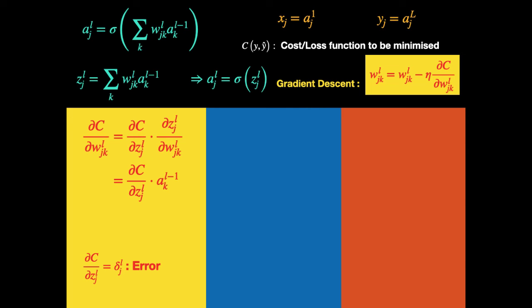We denote ∂C/∂Z superscript L subscript J by the symbol delta superscript L subscript J, which is called the error function. So the derivative of the cost function with respect to the weight simplifies to: delta superscript L subscript J multiplied by A superscript L-1 subscript K. After a forward pass, the values of A are already available at every node, so all we need to compute are the delta values. Once we have the delta values, computing ∂C/∂W becomes very straightforward — we just need a protocol to compute these delta values layer by layer.